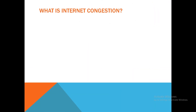So let's understand what is internet congestion by taking an example of road congestion. When loads of vehicles are moving on the road very fast and overtaking each other to reach their destination faster, sometimes this results in a traffic jam. This condition is known as road congestion.